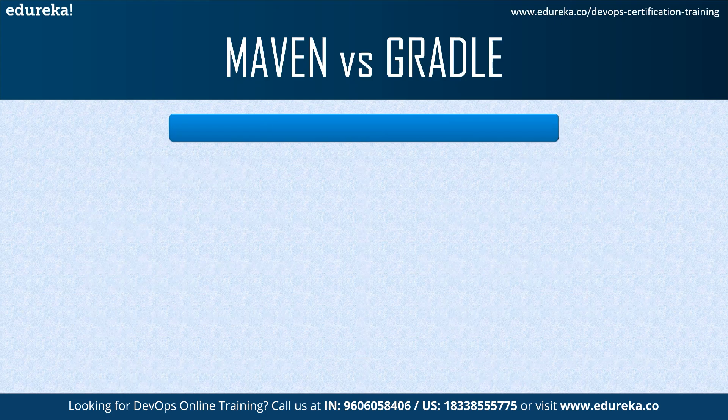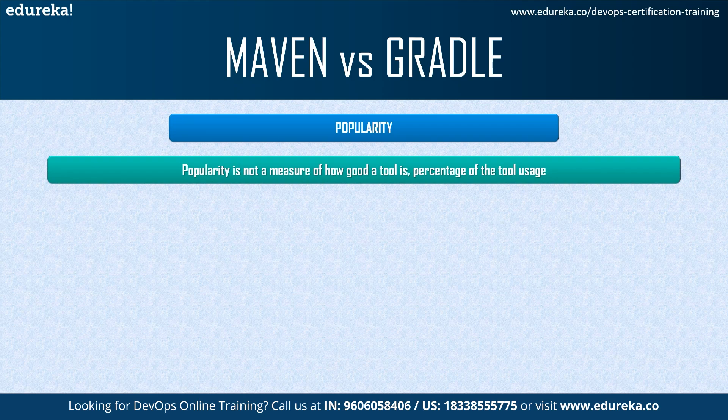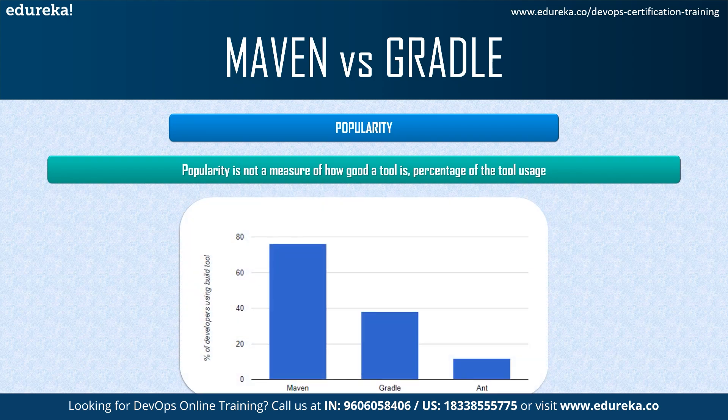The final comparison is on popularity. We're not measuring which tool is better, but looking at the percentage of tool usage. As the graph shows, Maven is highly popular — up to 80% of developers use Maven as a build automation tool — while Gradle is gradually gaining popularity, with up to 40% of developers using it. There is also Ant, another Apache build automation tool, used by around 15 to 20% of developers. This report is according to statistics taken in 2021.